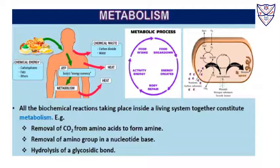The intermediate products which are made as a result of metabolic reactions are called metabolites. The flow of metabolites in a metabolic pathway has a definite rate and direction, just like normal automobile traffic. This metabolite flow is called the dynamic state of the body constituents.